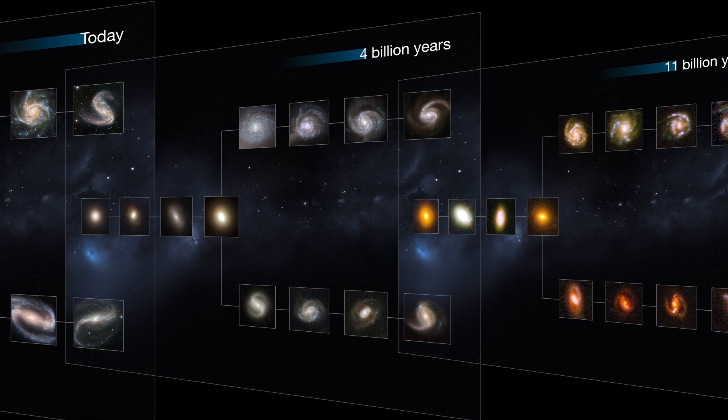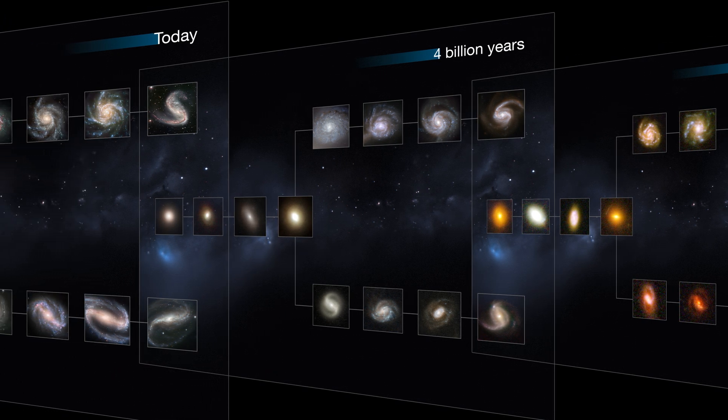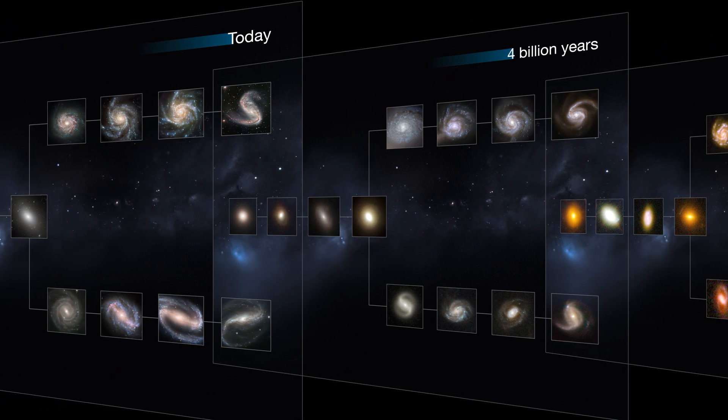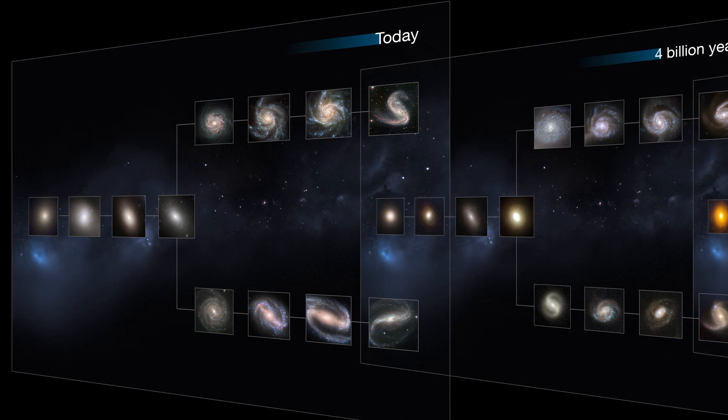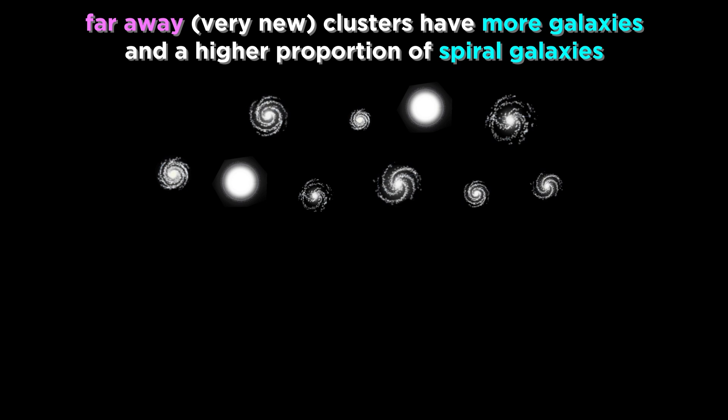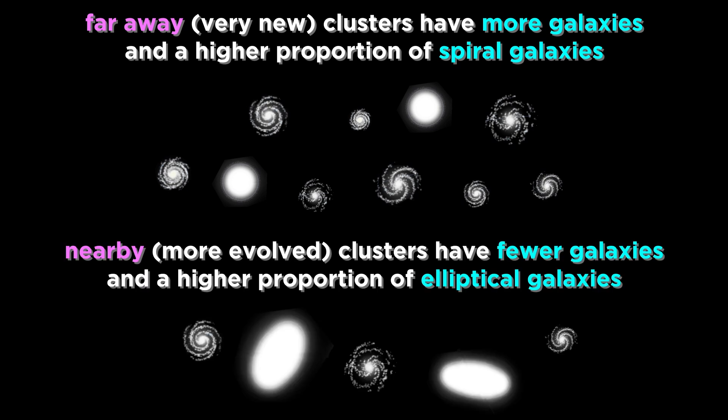This is confirmed by observation. We can look at very far away clusters and see what they looked like billions of years ago, given the time it has taken their light to get to us. These typically have more galaxies and a higher proportion of spiral galaxies. By contrast, nearer clusters have fewer galaxies and more elliptical galaxies, supporting the notion of galactic mergers.